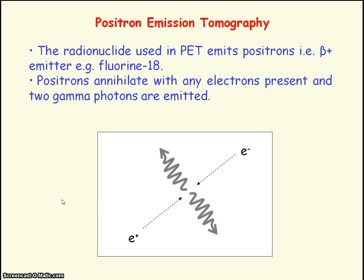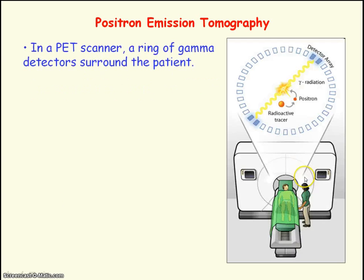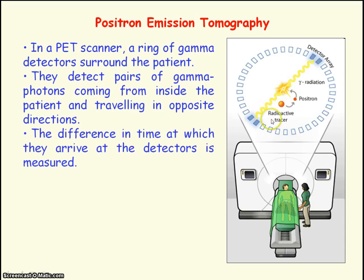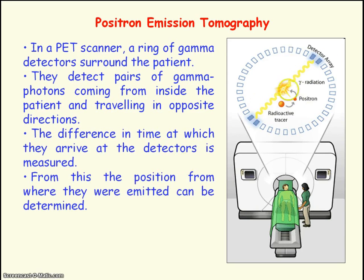This process is an example of the conversion of mass — of the positron and the electron — into energy, which is the gamma photons. In a PET scanner, the patient is surrounded by a ring of gamma detectors. These detectors detect the pair of gamma ray photons coming from inside the patient and travelling in opposite directions. The difference in time at which the gamma ray photons arrive at the detectors is measured.